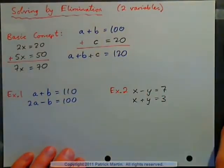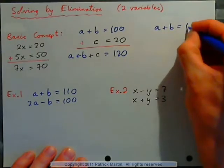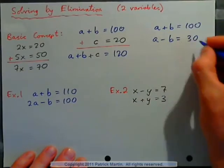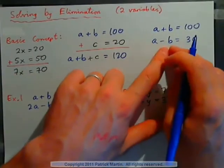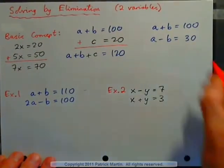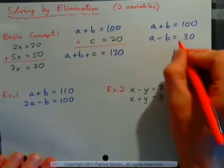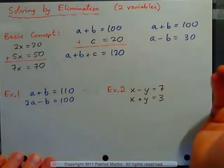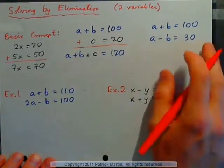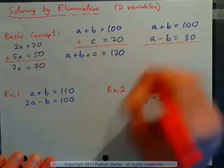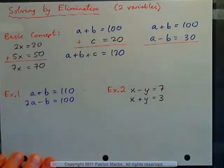Here's where it's useful. Say an apple plus a banana costs 100 cents, but an apple minus a banana leaves 30 cents — the difference between the price of the apple and the banana is 30 cents. What is the price of each? I have two equations and two missing numbers, so I should be able to find what these missing numbers, a and b, are. I'm going to solve this by elimination.